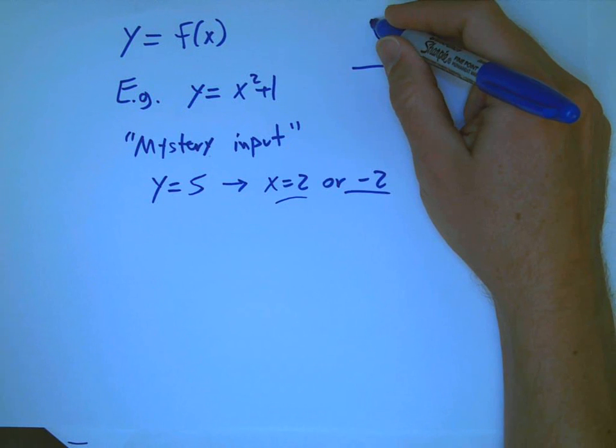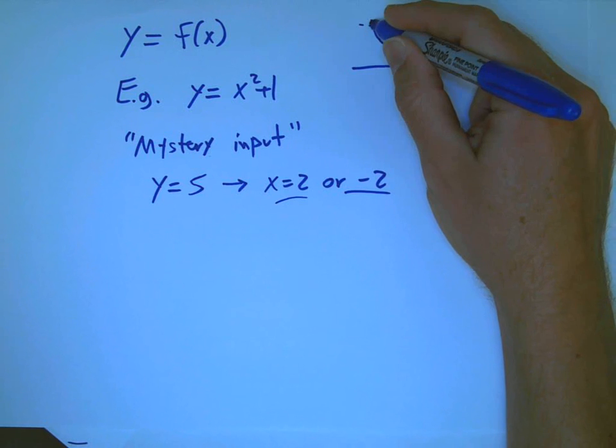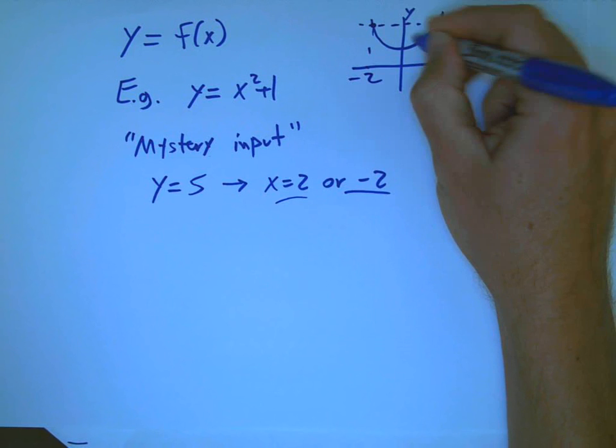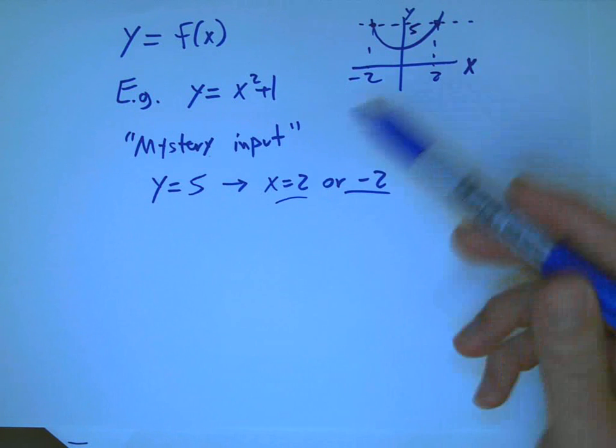What's happening graphically is that setting a fixed value of y means putting in a horizontal line, and that intersects the graph two places. For a fixed value of y, there's two possible inputs.